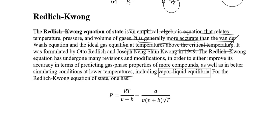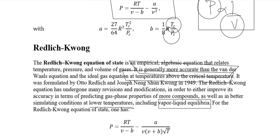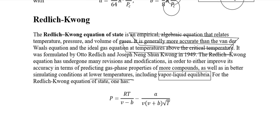The Redlich-Kwong equation has a form P = RT/(V − b) − a/[...] — comparing it with Van der Waals, it is a little more complicated. The Redlich-Kwong equation is more complex than the Van der Waals equation, but it is also more accurate. So if we want more accuracy in describing real gases, we must accept more complexity in the equation.